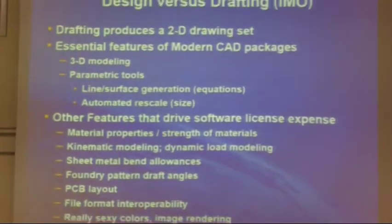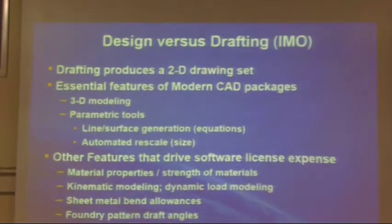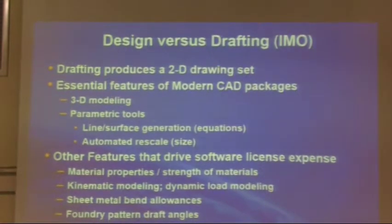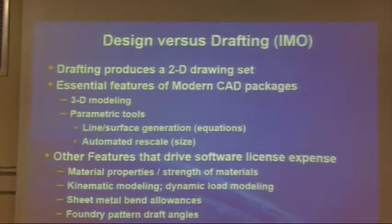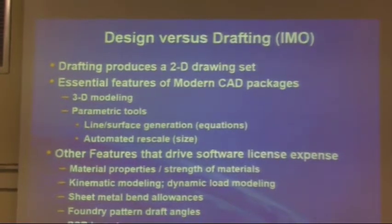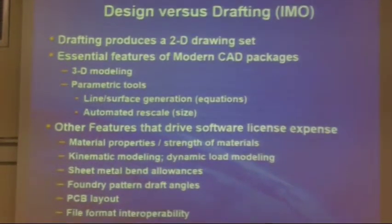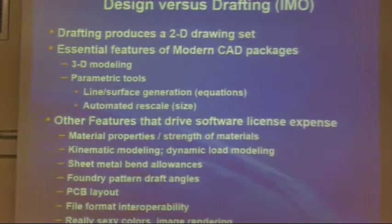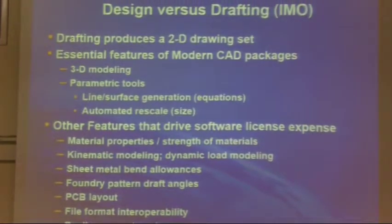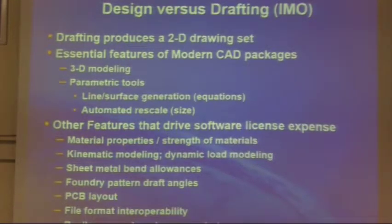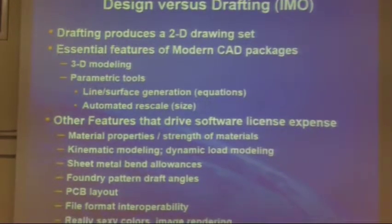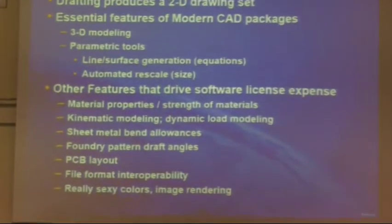Computer-aided design versus computer-aided drafting: drafting produces a 2D drawing set. What I think the essential features of a CAD program are is that you do 3D modeling and also parametric modeling. There are really two definitions of parametric: one is you can use it to generate equations for lines or surfaces, and the other is you can set up the drawing so it automatically scales by just changing a dimension.